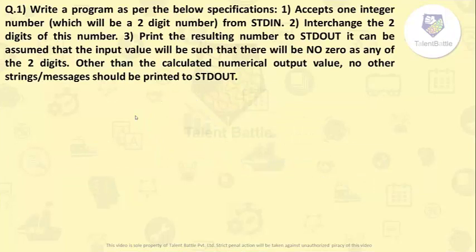This is a coding question. Write a program as per the below specifications. The conditions are: accept one integer number which will be a two-digit number from stdin, interchange the two digits of this number, and print the resulting number to stdout.